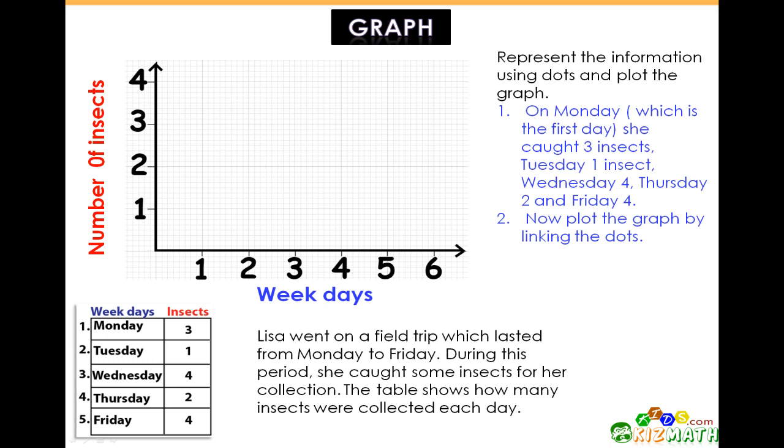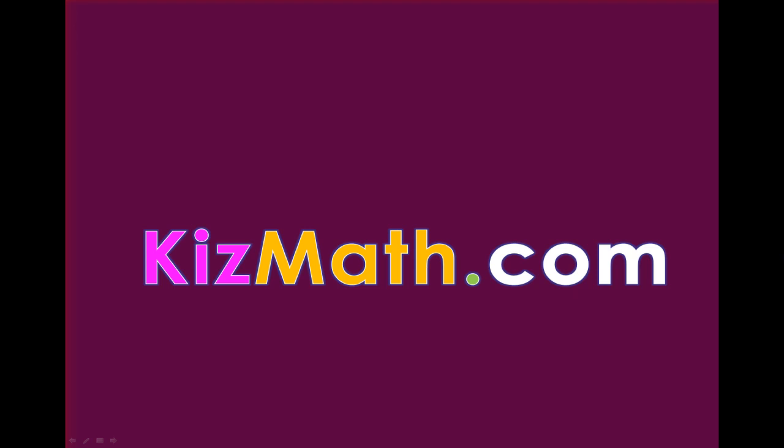On Monday she caught three insects. On Tuesday she caught one insect. On Wednesday she caught four insects, Thursday two insects, and Friday four insects. Now we can plot the graph by linking the dots. This is the end of the lesson.